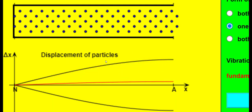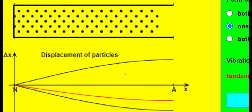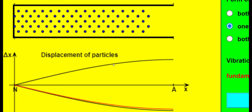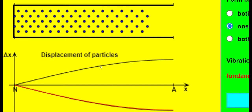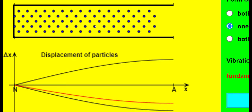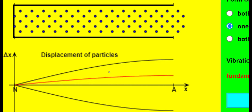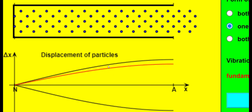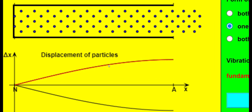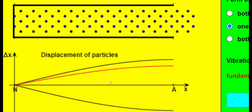This black curve here and its reflection down here represent the amplitude of a particular particle of air at a certain position along the tube. While this moving red curve shows how the displacement of that particular particle changes over the course of time.